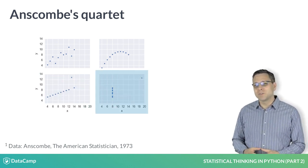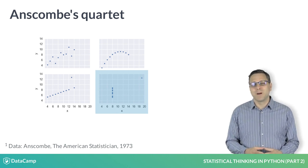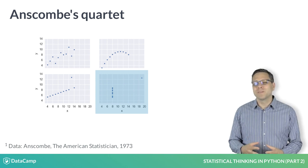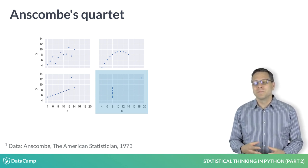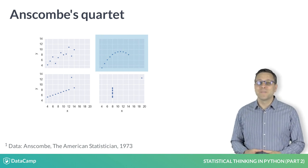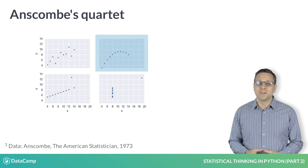Now, this data set might also have a linear relationship between X and Y, but from the plot, you can conclude that you should try to acquire more data for intermediate X values to make sure that it really does. And this data set is definitely not linear, and you need to choose another model.